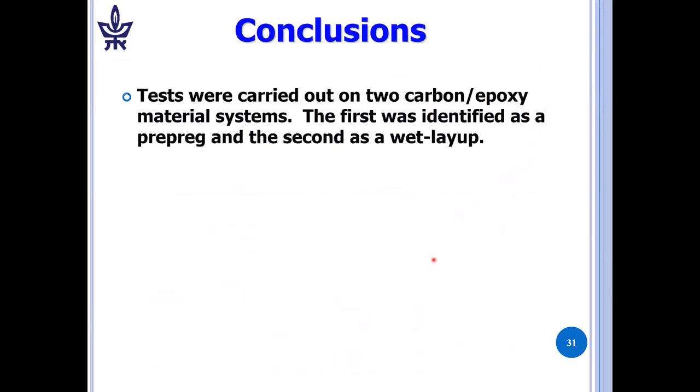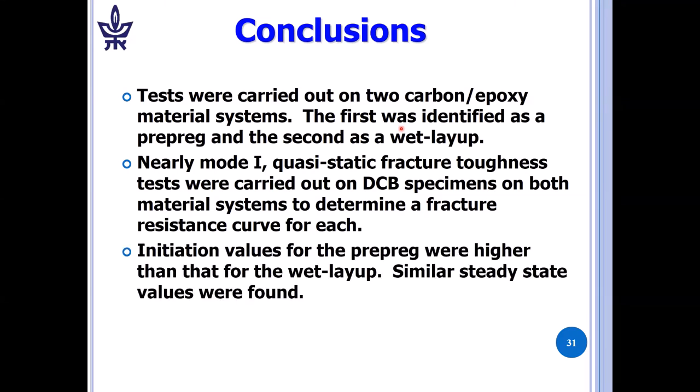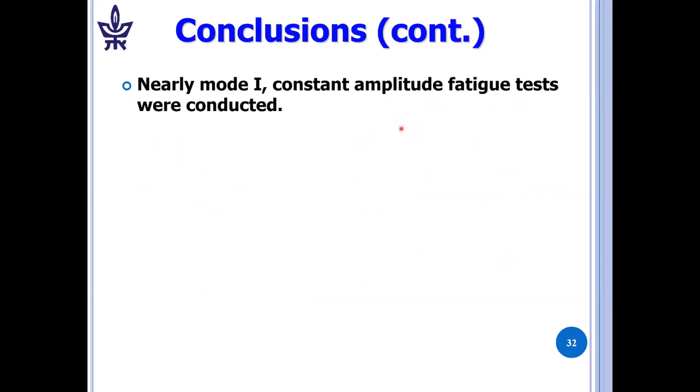In conclusion, tests were carried out on two carbon fiber material systems. The first was identified as a prepreg and the second as a wet layup. Nearly mode one, and why is it nearly mode one? Because we have an interface between plies with fibers in different directions or yarn in different direction. So we have effectively an interface crack between two anisotropic materials. So it's nearly mode one. We examined how much mode two and mode three we have, and we felt it was negligible. We have nearly mode one quasi-static fracture toughness tests on DCB specimens for both material systems. We determined a fatigue resistance curve that gave us the G1R behavior. Initiation values for the prepreg were higher than that for the wet layup, and similar steady state values were found.